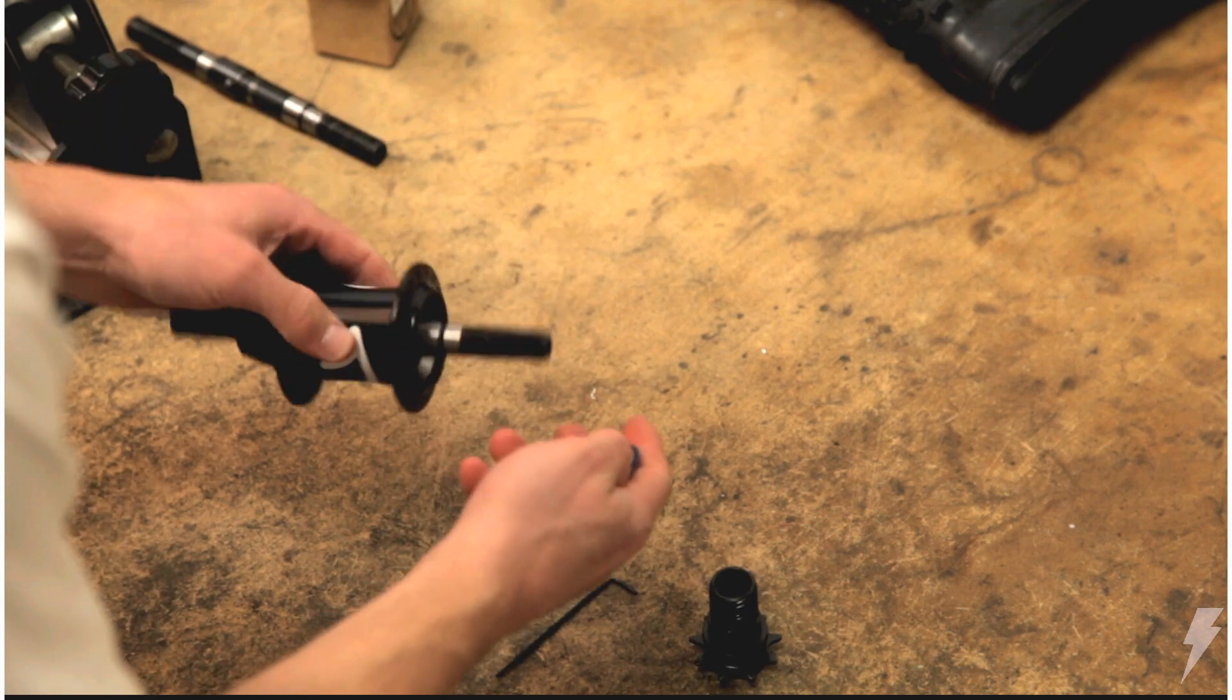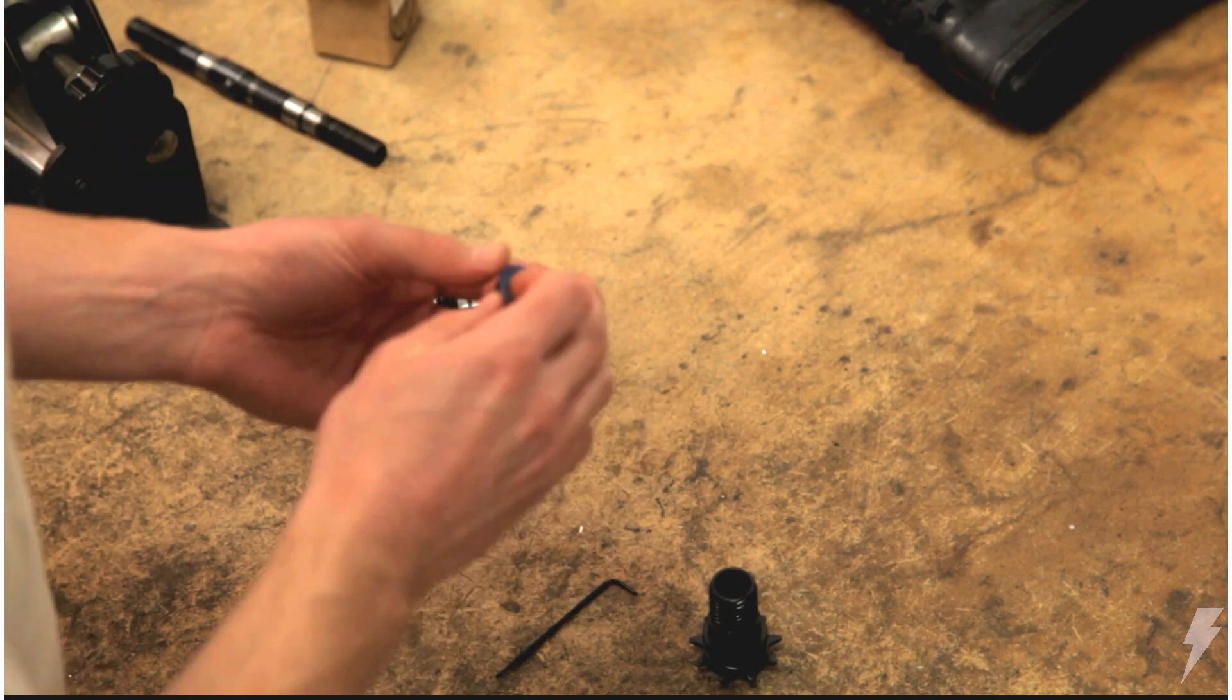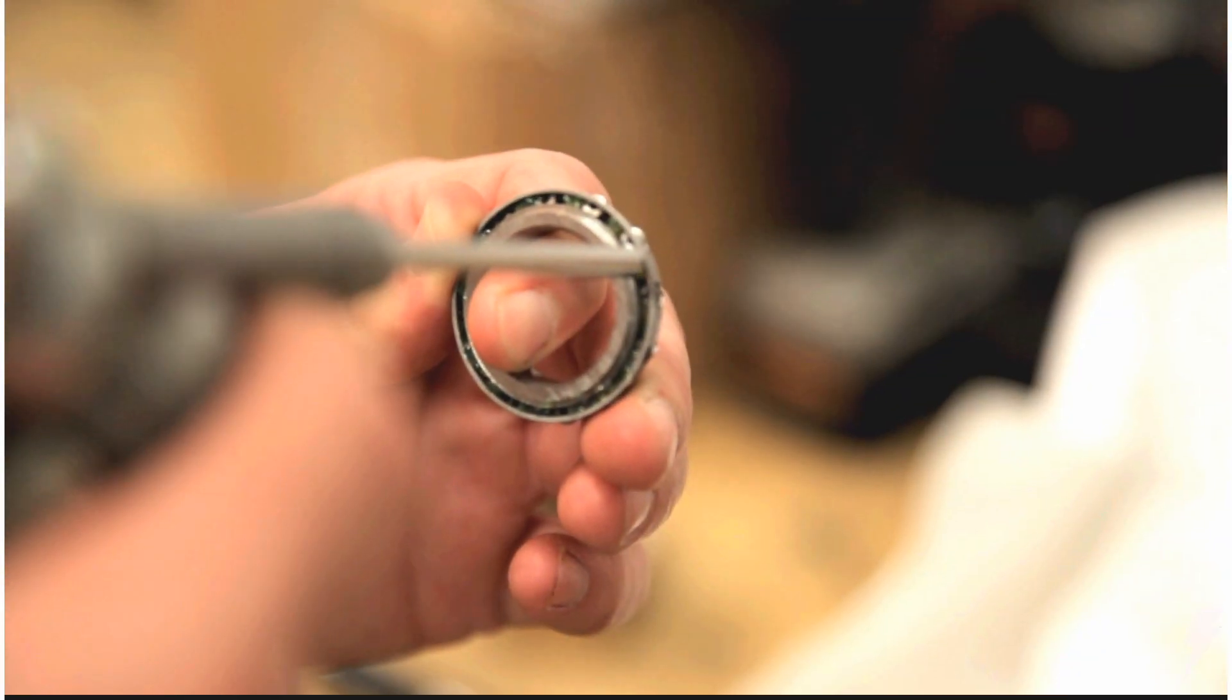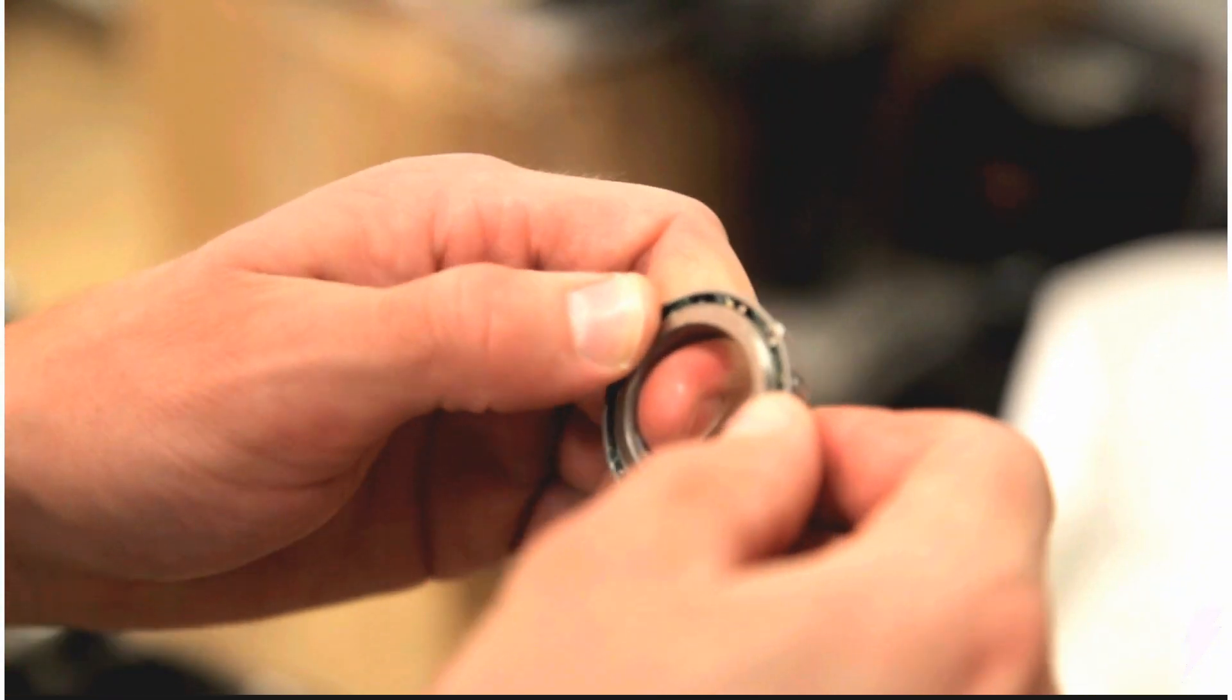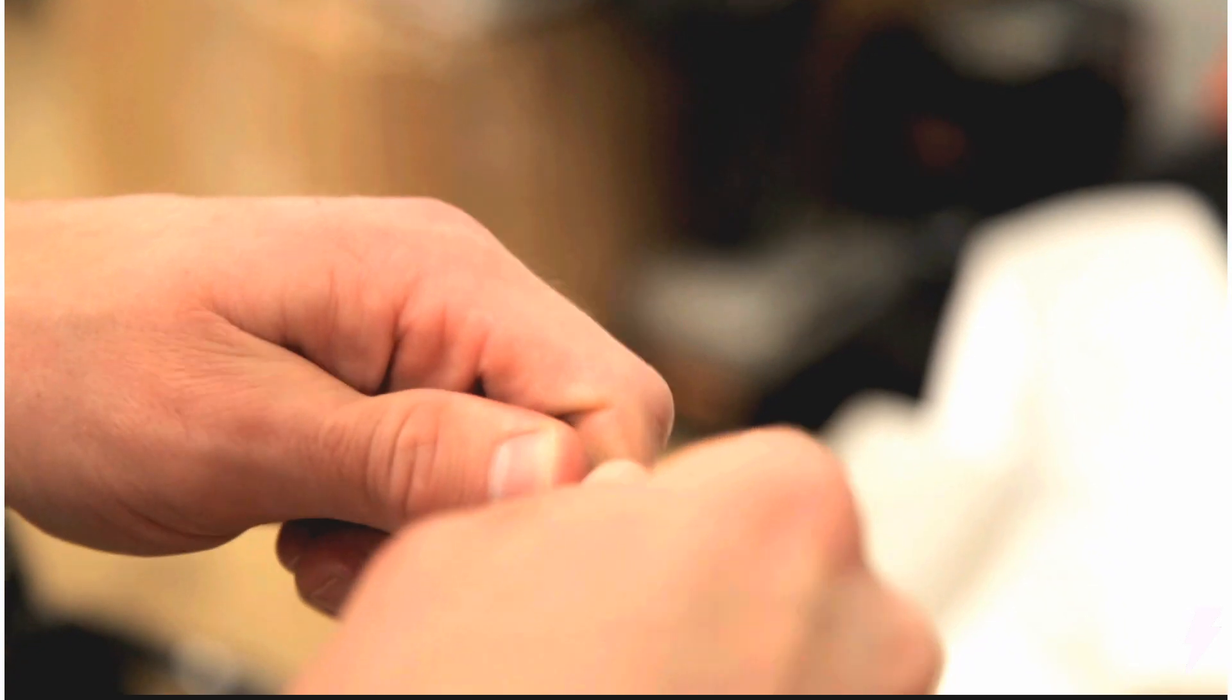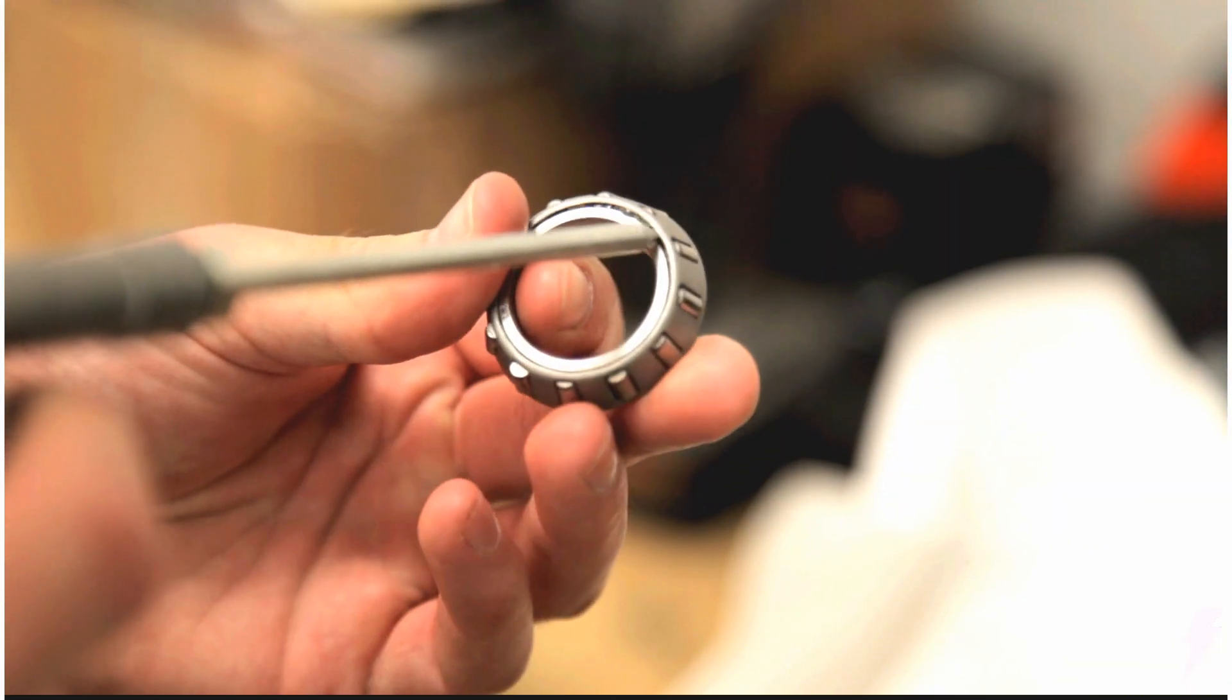With the driver removed, pop out this tapered roller bearing and remove any old grease. Once clean, start by applying a fair amount of grease between each of the rollers, pushing the grease down and into the rollers as you go. Do this on both sides of the bearing.